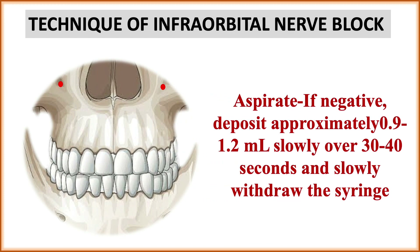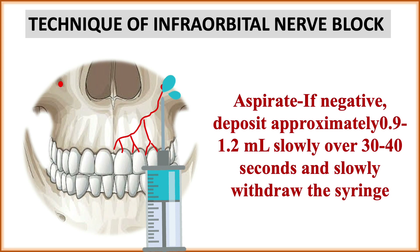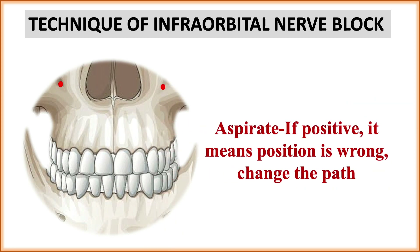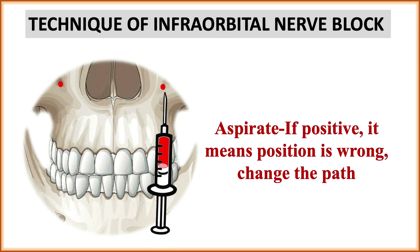A very important point: always aspirate. If aspiration is negative, then only deposit 0.9 to 1.2 ml of solution slowly over 30 to 40 seconds. If positive, it means you are directly entering an artery or vessel — change the path slightly before depositing. A positive aspiration will always show blood in the needle because it is entering a vessel.